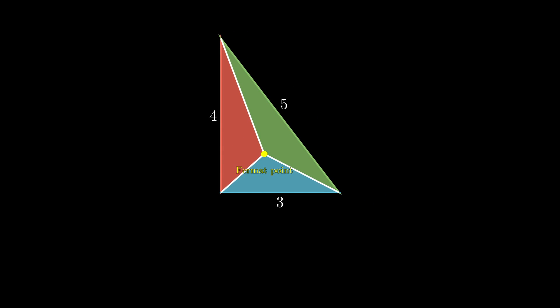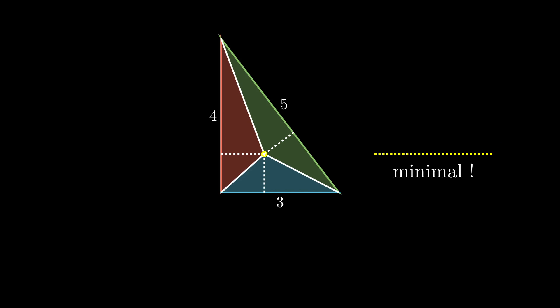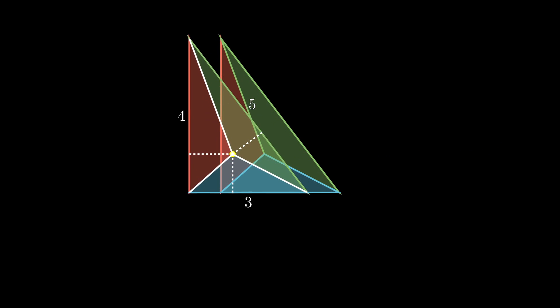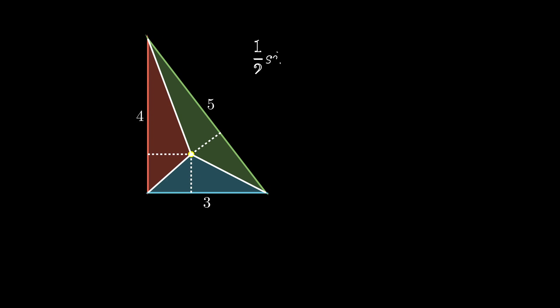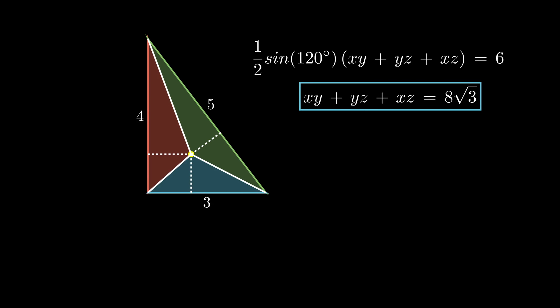Anyway, this point is remarkable because it has the least combined distance to all three sides amongst all internal points. Isn't this beautiful? Using the sine theorem, we add the areas of the three triangles, and the total area is simply 6. Rearranging, we get the answer.